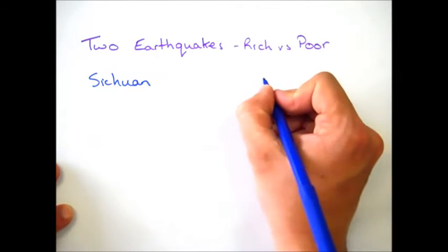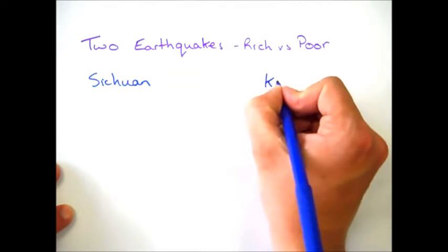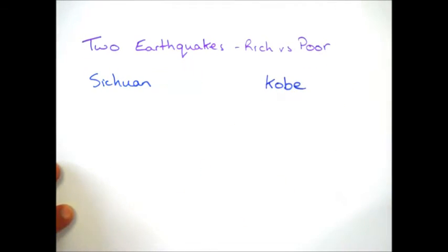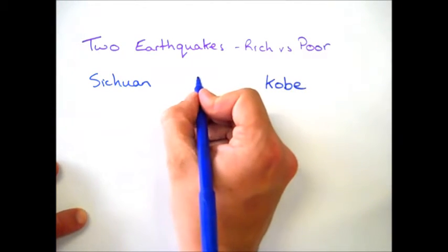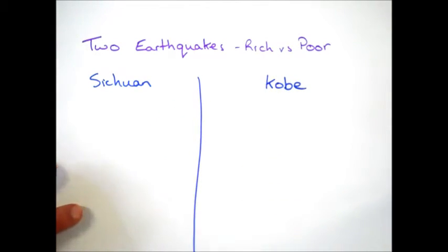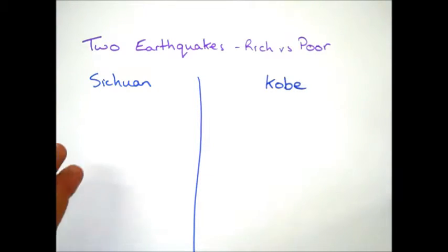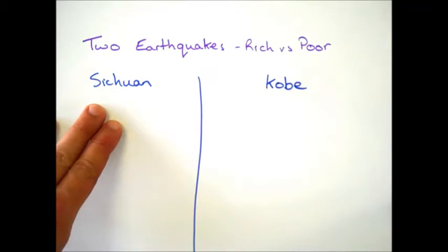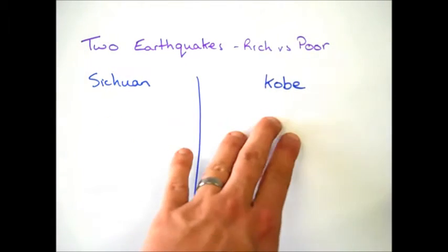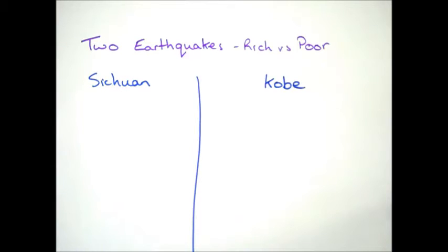And then we look at Kobe, which is a nice example of an earthquake hitting a rich part of the world. What's important to remember is that these two earthquakes were of very similar magnitude, so any real difference in terms of the impacts and the responses is primarily down to the difference in levels of wealth. Remember, Sichuan is a poor area of China, and Kobe in Japan is a rich part of the world. So let's start off by looking at the impacts.